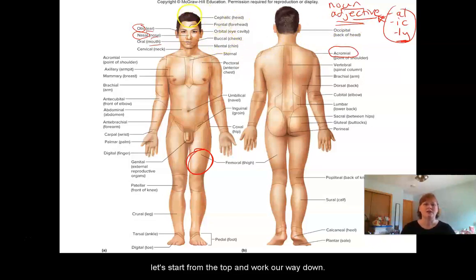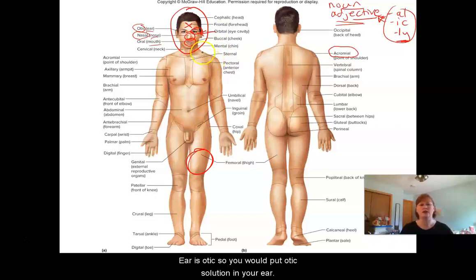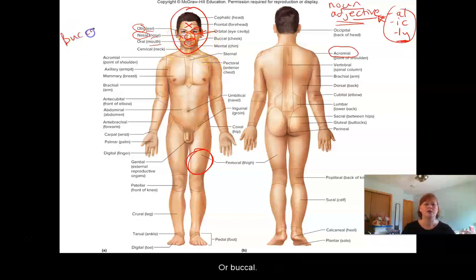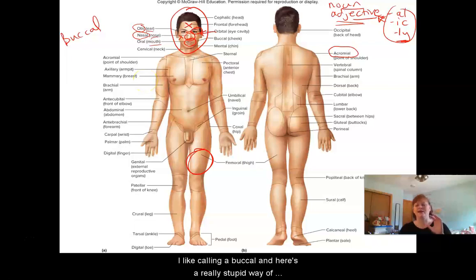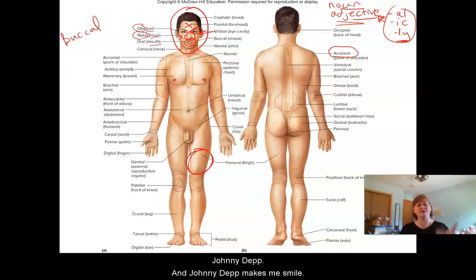So let's start from the top and work our way down. The entire head is cephalic. Your forehead is frontal. Your eye is orbital, nasal, oral. Your ear is otic — so you would put otic solutions in your ear. Your cheek is buccal. I always just think that my cheek is buccal — that reminds me of the muscle deep in the cheek called the buccinator. Buccinator makes me think of buccaneers, buccaneers make me think of pirates, and pirates make me think of Johnny Depp. And Johnny Depp makes me smile. So that helps me remember buccal.